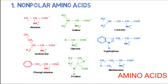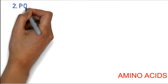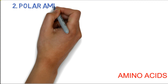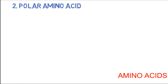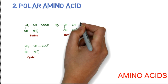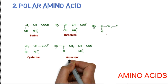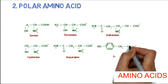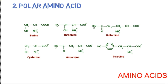The second group is called polar amino acids. If the polar R group is attached, there are six amino acids: serine, threonine, glutamine, cysteine, asparagine, and tyrosine.